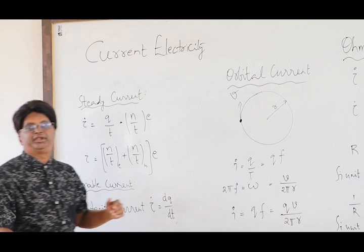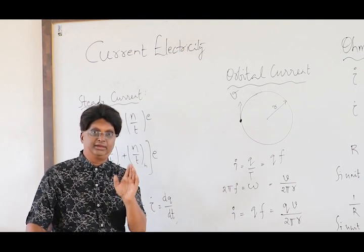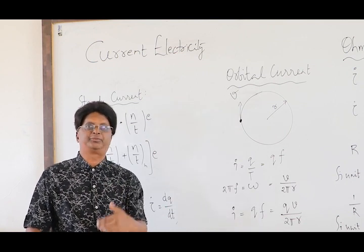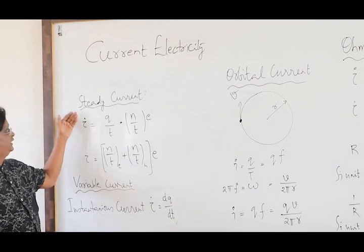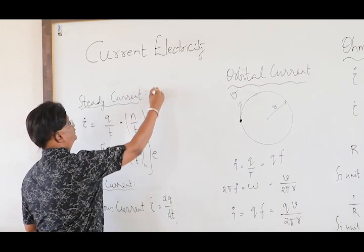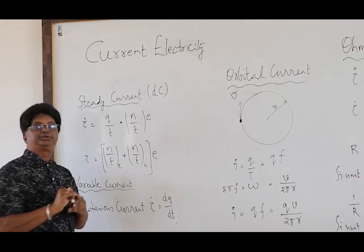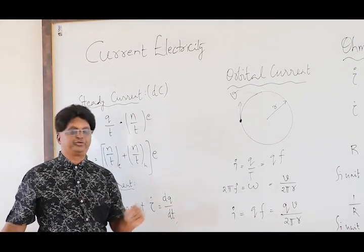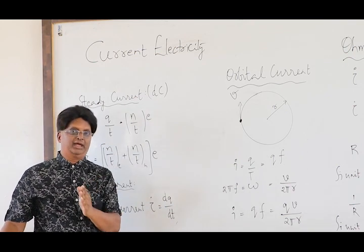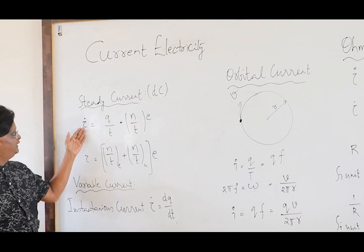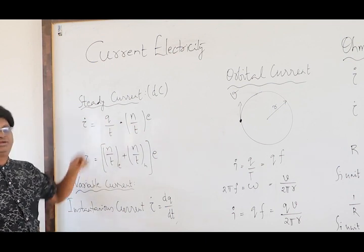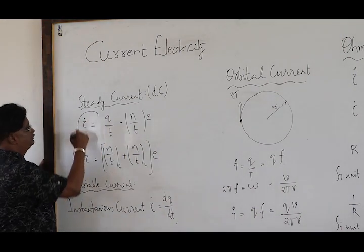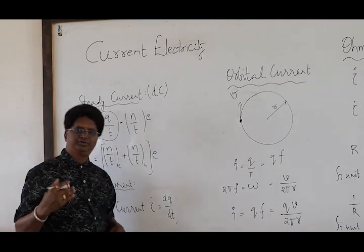Now let me come to the definition of current. We give three expressions for current. The first one is steady current, also very popularly called DC — direct current — with no changes either in magnitude or direction. Current is same at all times in both magnitude and direction. This is how we define: I equals Q by T. If Q is the quantity of charge that flows through a given cross-section, then I = Q/T, which we call the rate of flow of charges.